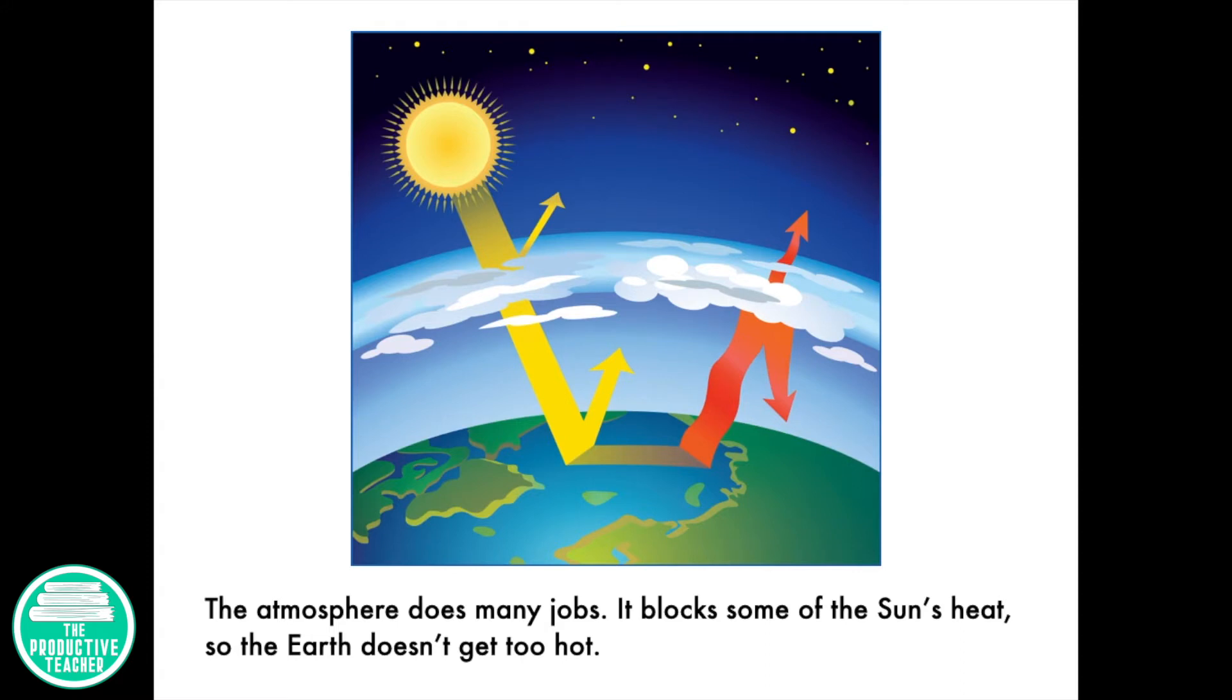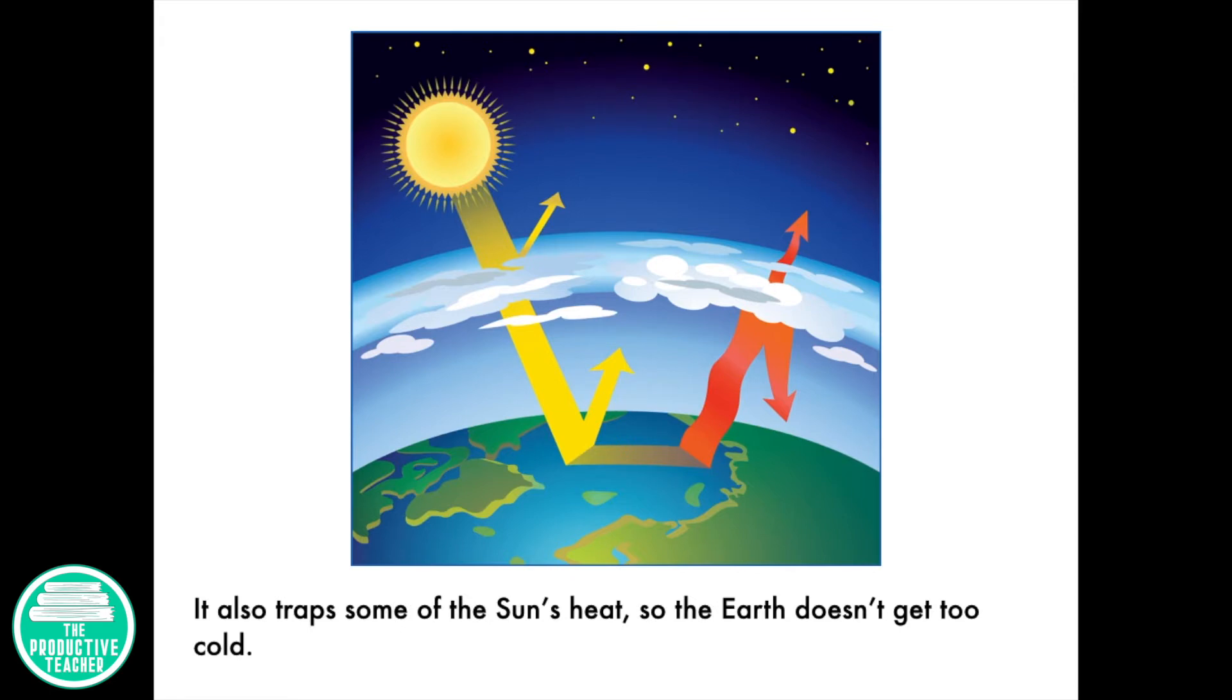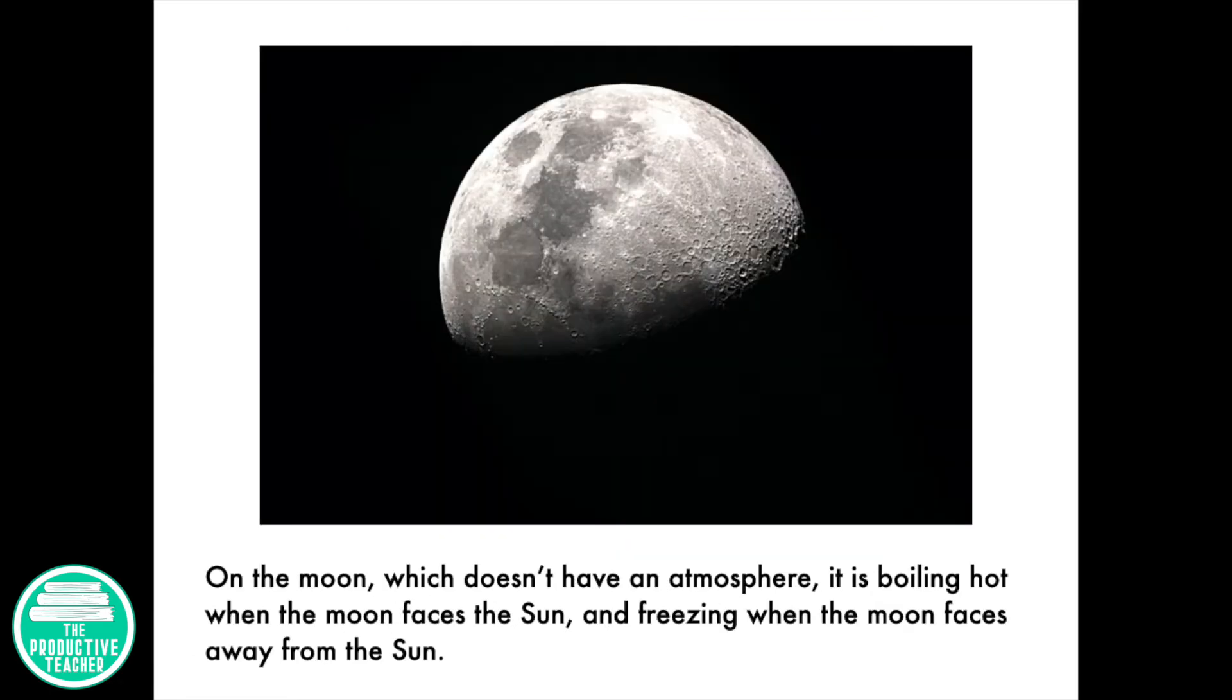The atmosphere does many jobs. It blocks some of the sun's heat so the Earth doesn't get too hot. It also traps some of the sun's heat so the Earth doesn't get too cold. On the moon, which doesn't have an atmosphere, it is boiling hot when the moon faces the sun and freezing when the moon faces away from the sun.